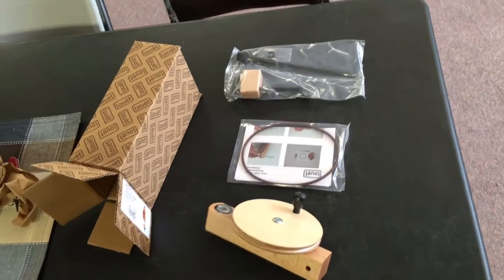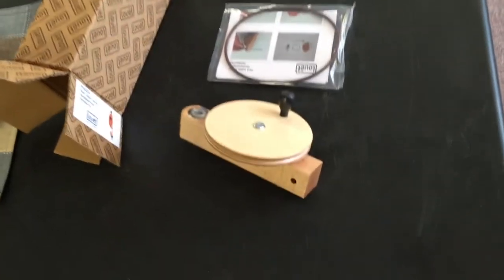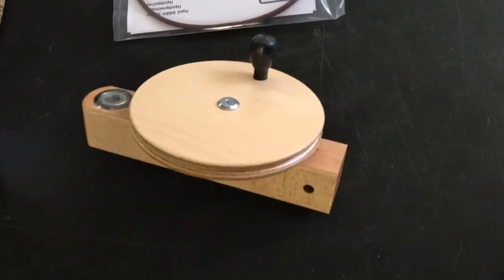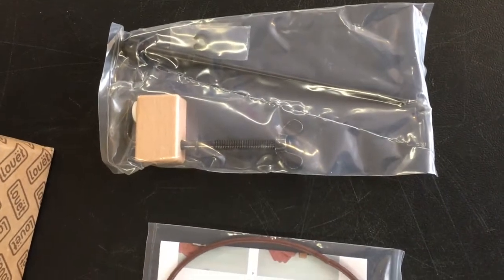When you unpack the hand bobbin winder, you'll have three pieces coming out of the box: the main crank, the drive band, and the shaft and cable mount.